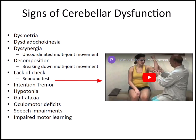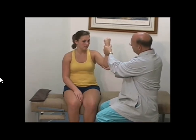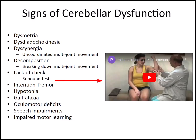Another sign is lack of check, assessed with the Holmes rebound test, which is performed for both cerebellar and proprioceptive problems. The test involves resisting elbow flexion and then releasing the arm — the patient tries to maintain position. In the video, the examiner demonstrates a negative (normal) result. A positive result would show the patient unable to maintain approximately 90 degrees of elbow flexion, with the arm flying up to hit their shoulder or face.